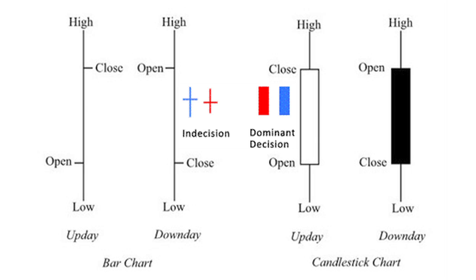Different color schemes are used to determine whether the price movement is bullish, increasing in price, or bearish, decreasing in price. Bullish candles are usually white, blue, or green, whereas bearish candles are black or red.